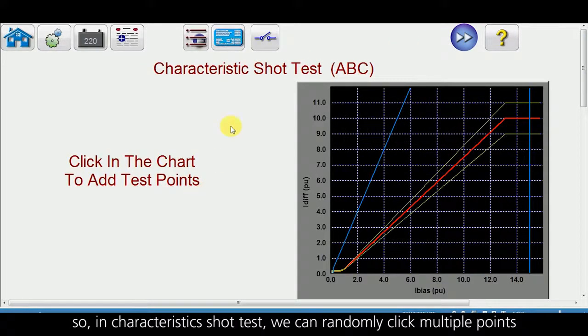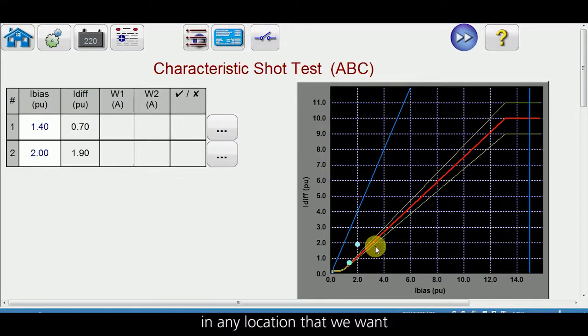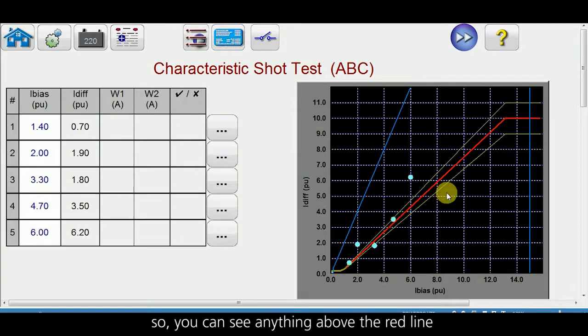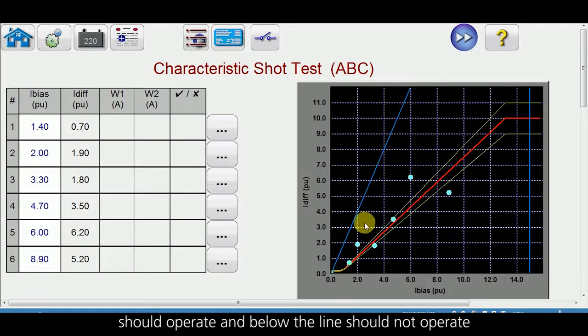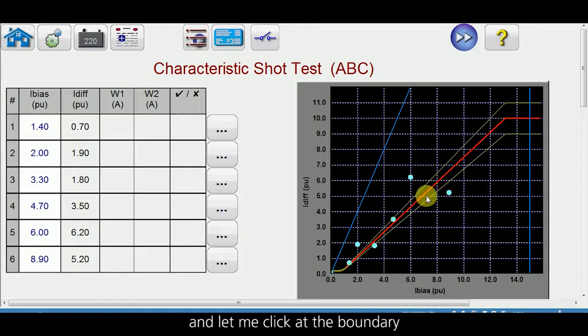In characteristics shot test we can randomly click multiple points in any location that we want. You can see anything above the red line should operate and below the line should not operate, and let me click on the boundary.